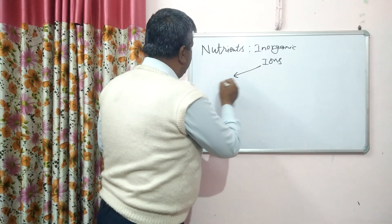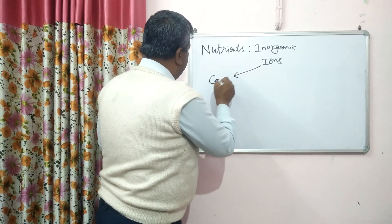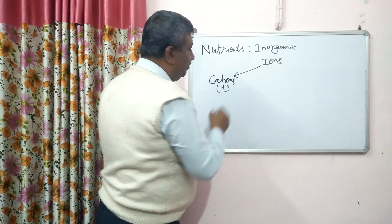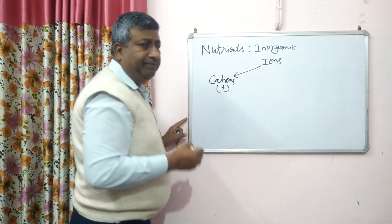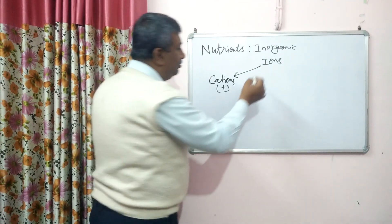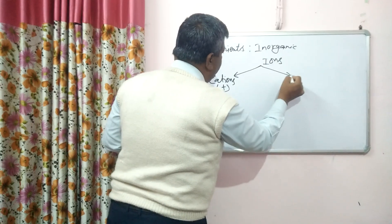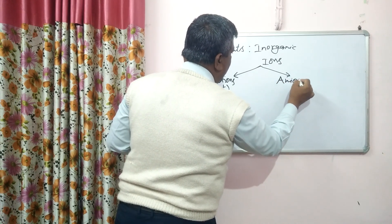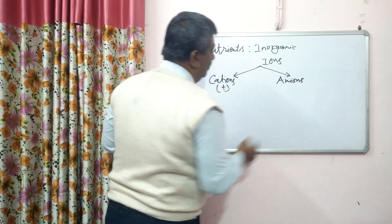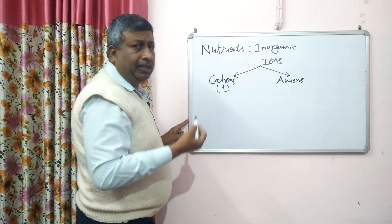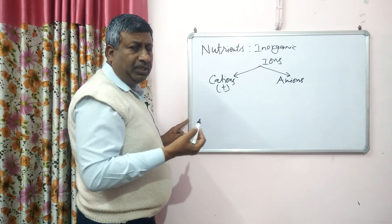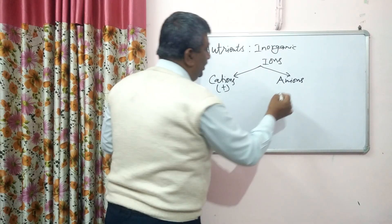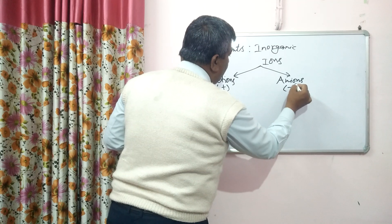So ions, if positively charged, are called cations. Cations have a deficit of electrons. And if an atom has an excess of electrons compared to normal, it becomes negatively charged — these are anions.